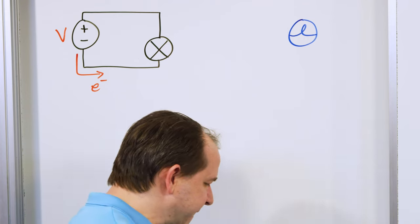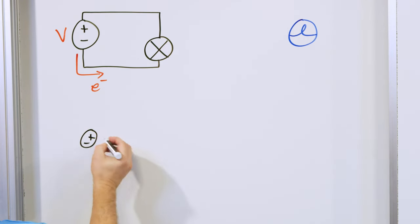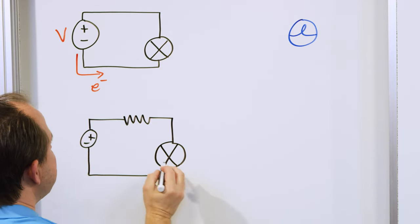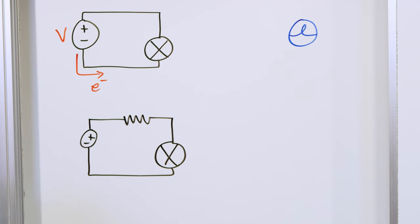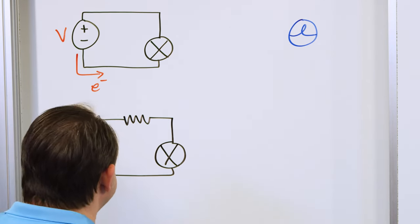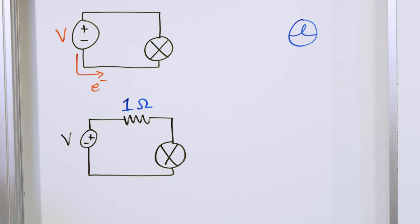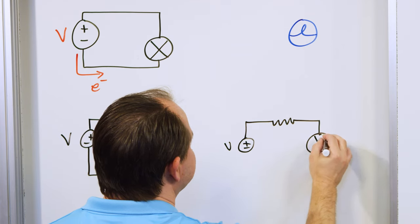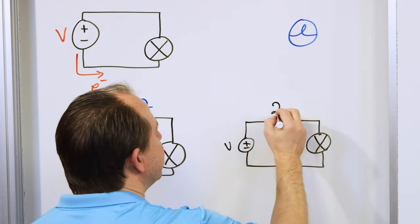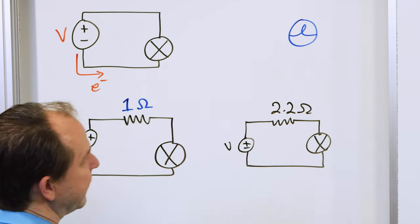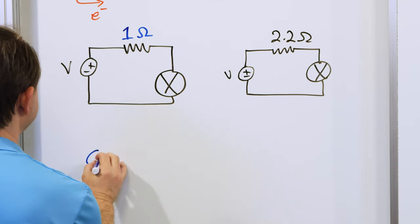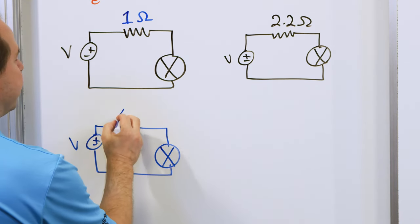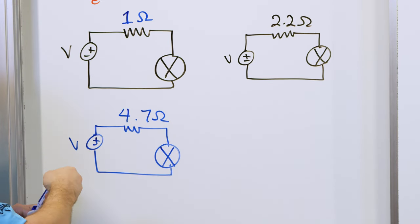I want to draw these so you get in the habit of understanding how to draw circuits. The symbol for a voltage source — now we have this resistor in series with the light bulb. Series means there's only one path for the current and they're both in a straight line, so the current has to go through both of them. In the first example we had a one ohm resistance. In the second circuit you would have the voltage source, a resistance, and the light bulb — but that resistance was 2.2 ohms. And the last one had a voltage source, the light bulb, and 4.7 ohms. Current is circulating in all three cases, just going through a different resistor.